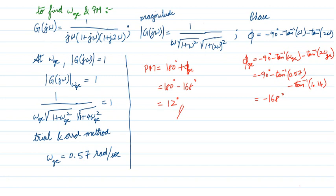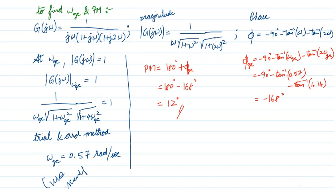In a scientific calculator, use the CALC function. In place of ω, enter a variable like 'a' using the alphabet key, press CALC, and evaluate the expression for various values until it equals 1. At ω = 0.57, the magnitude equals 1. That is the trial and error method to find ω_gc using the scientific calculator's CALC function.